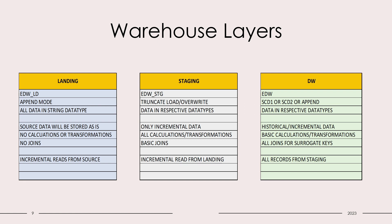The landing will have the source data as-is — we will be appending the data in the landing layer constantly. Staging will have only the incremental data read from the landing layer. The DW will always have the historical or incremental data. There will be no calculations or transformations on the landing layer. All calculations and transformations will be majorly done on the staging layer. On DW we will do only basic calculations, pushing most transformations to the staging layer.